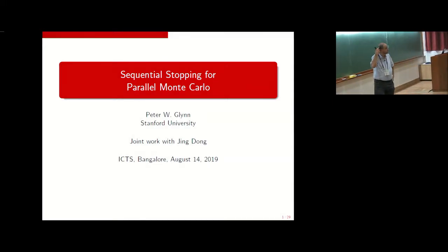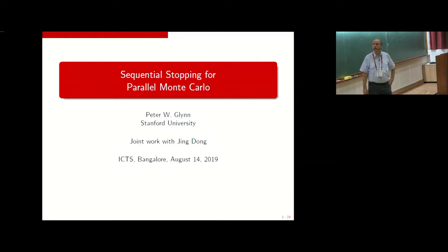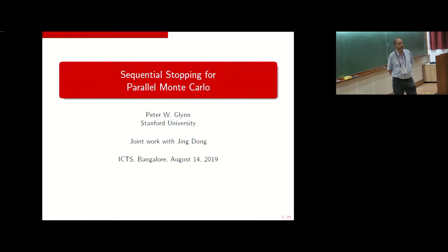I've given you some sense of the way the field has changed in the last 30 years. Today I'm going to talk about a problem that arises in the context of what's called output analysis. Output analysis within the simulation field is basically that part of the field that focuses on trying to understand how much error or uncertainty is present in a Monte Carlo calculation. All Monte Carlo algorithms are based on sampling, and all sampling-based algorithms will have random error. It's especially important within the Monte Carlo context to provide error assessments.